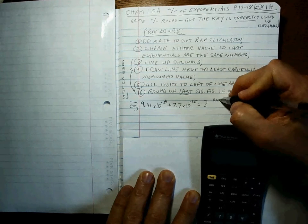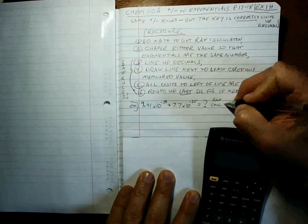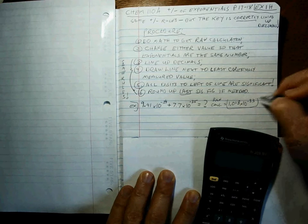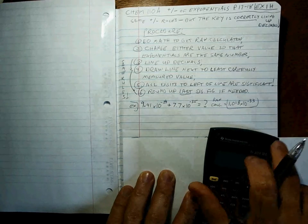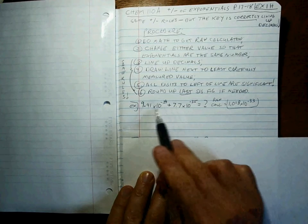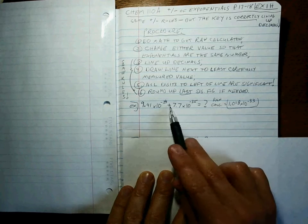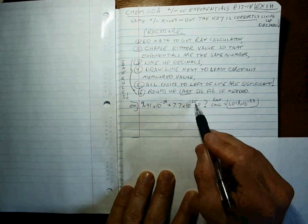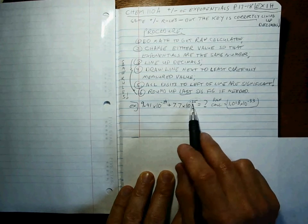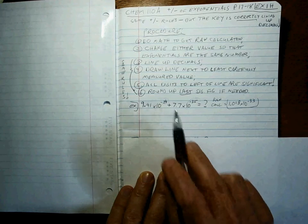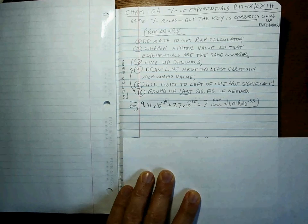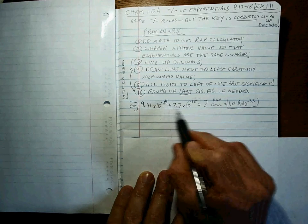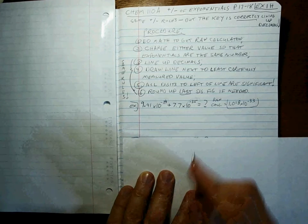9.41 times 10 to the minus 34 plus 7.7 times 10 to the minus 35 equals. Alright, so raw calculation is 1.018 times 10 to the minus 33rd. That's what my calculator says. You cannot tell how many sig figs is going to be in your result because it's an addition subtraction. Instead, you have to line up the decimals. But the only way you can line up the decimals is if both numbers are written to 10 to the minus 35 or both numbers are written to 10 to the minus 34.